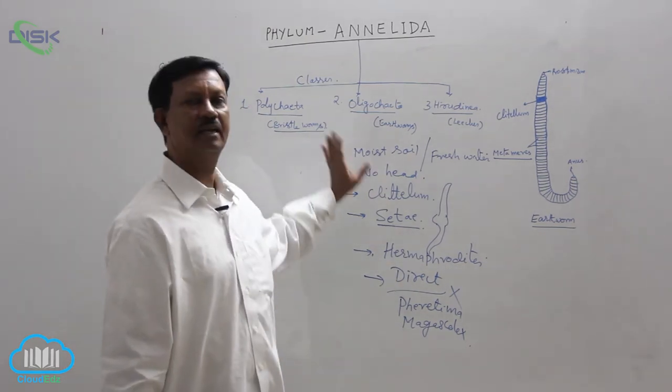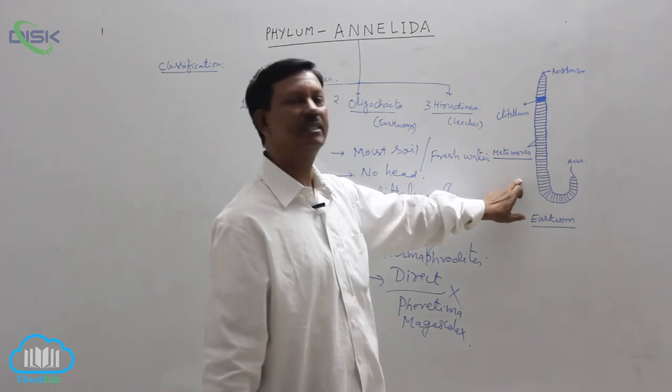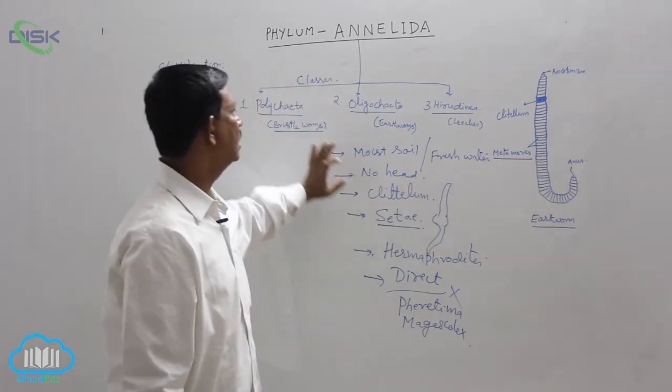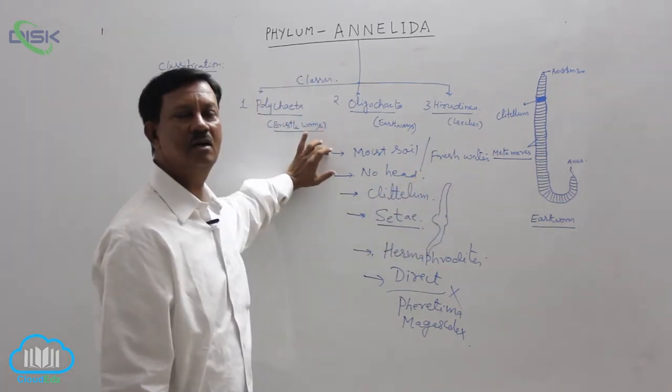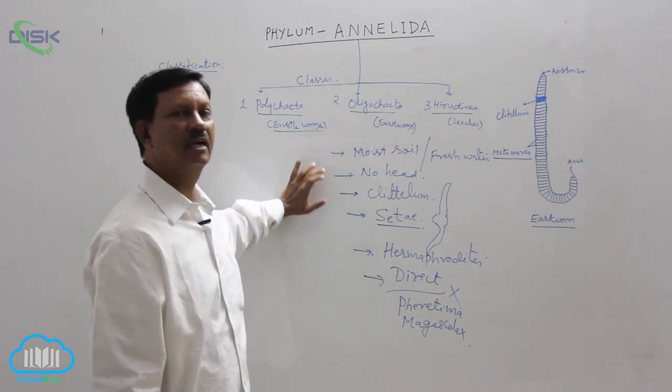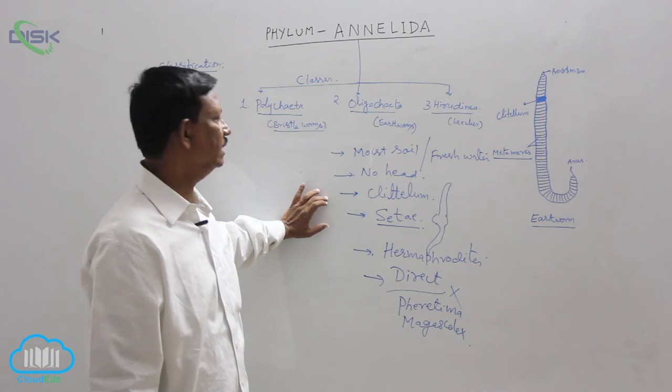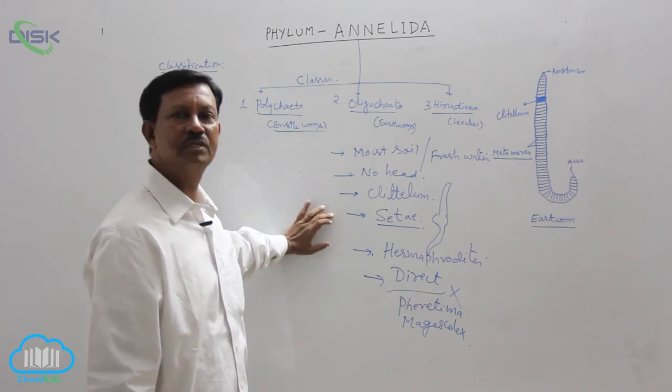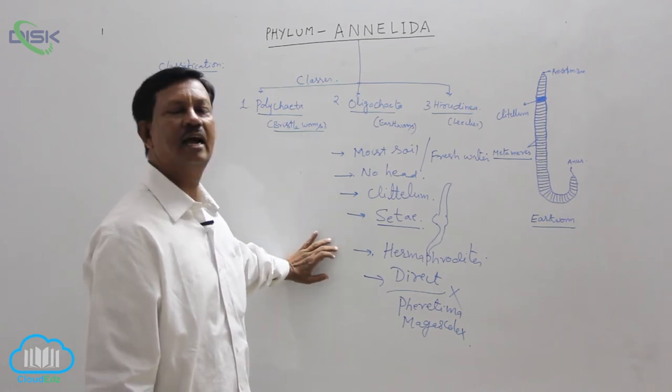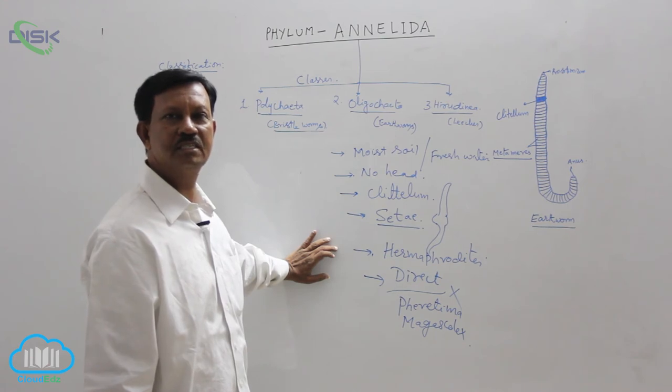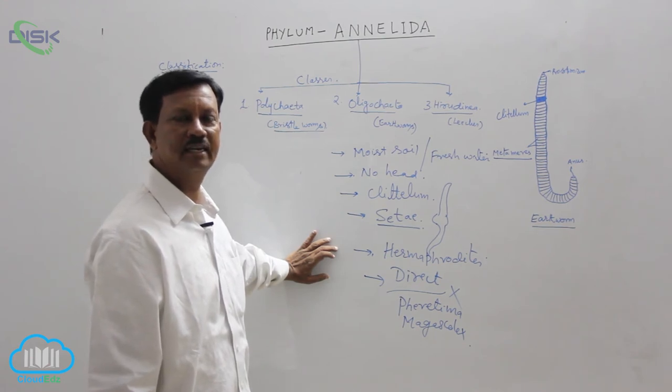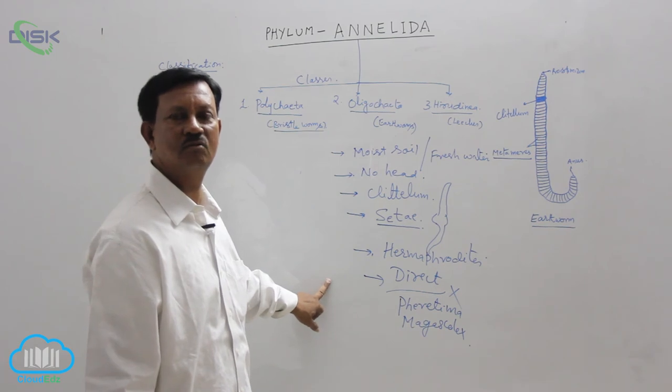These are the main characters of Oligochaeta. Once again, we have to discuss some characters: they are present in the moist soil, there is no distinct head, clitellum is present throughout their life, the main locomotory organs are chaetae, and they are monoecious or hermaphroditic animals. Development is direct without larval forms. Example is Pheretima and Lumbricus.